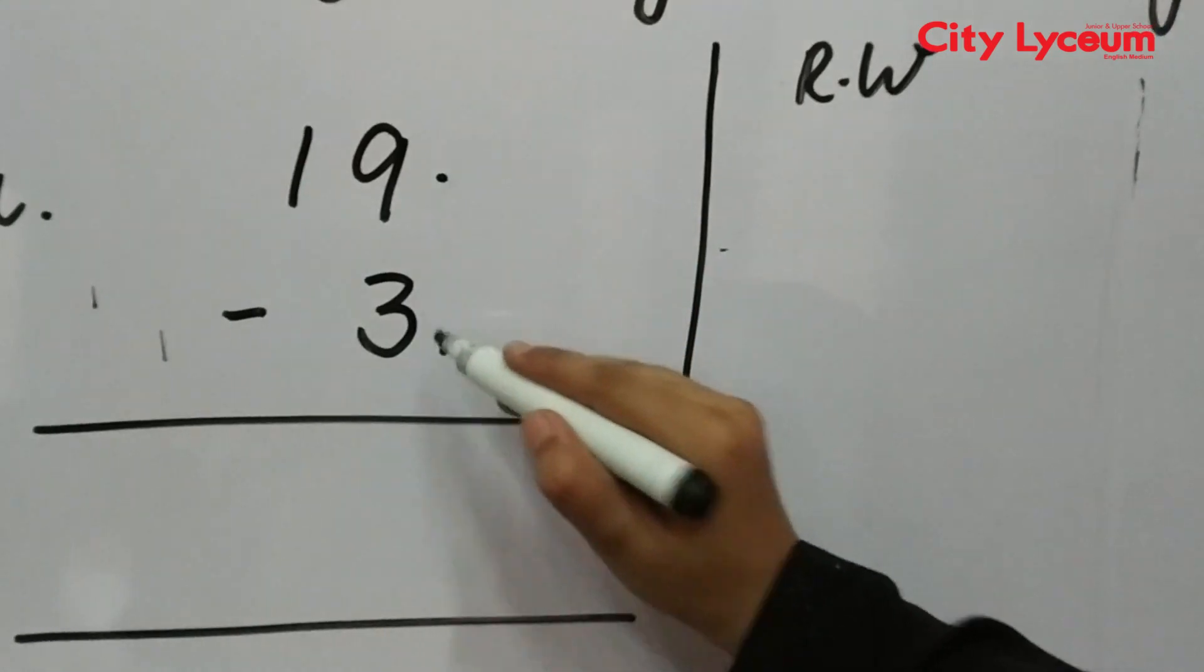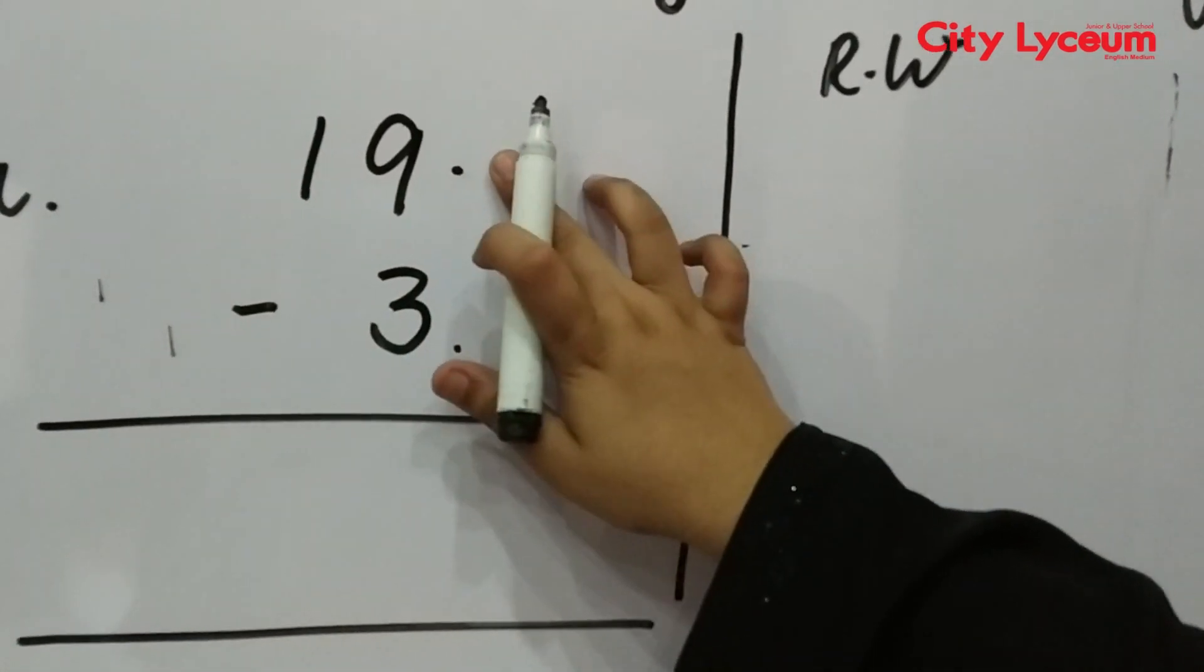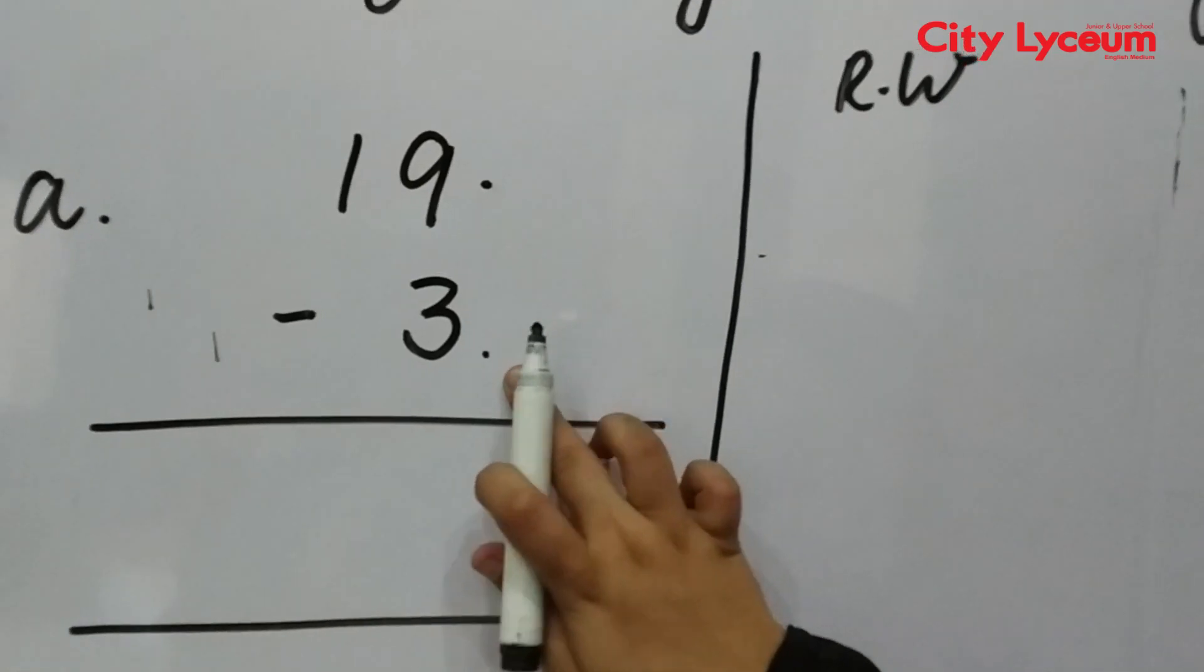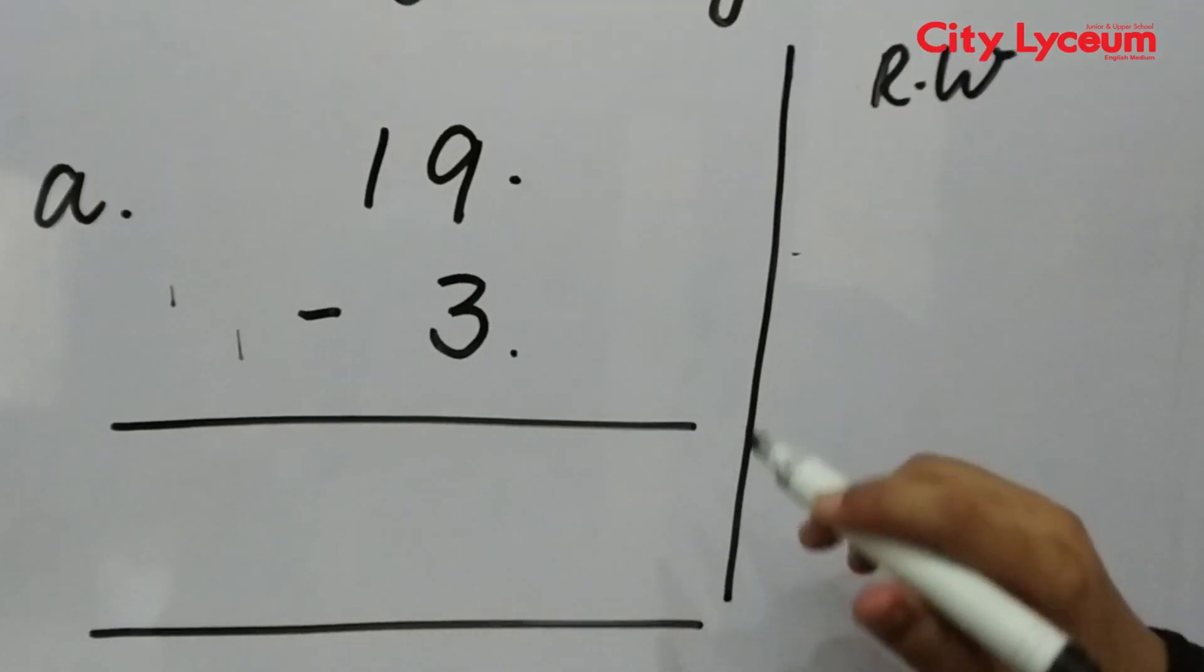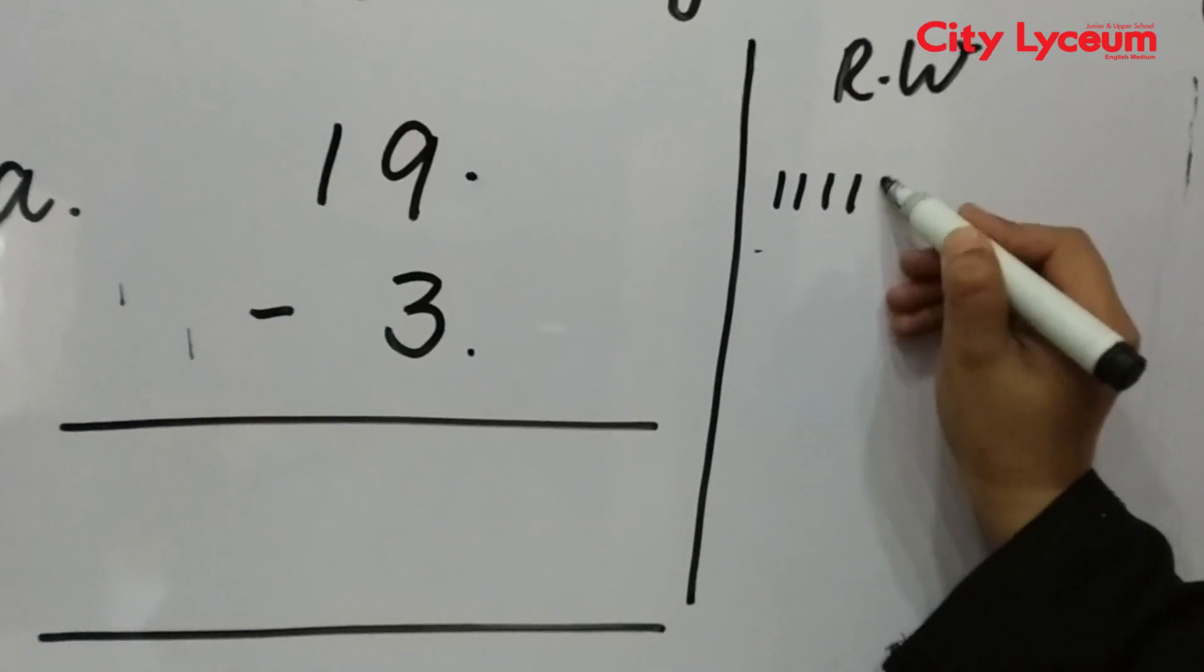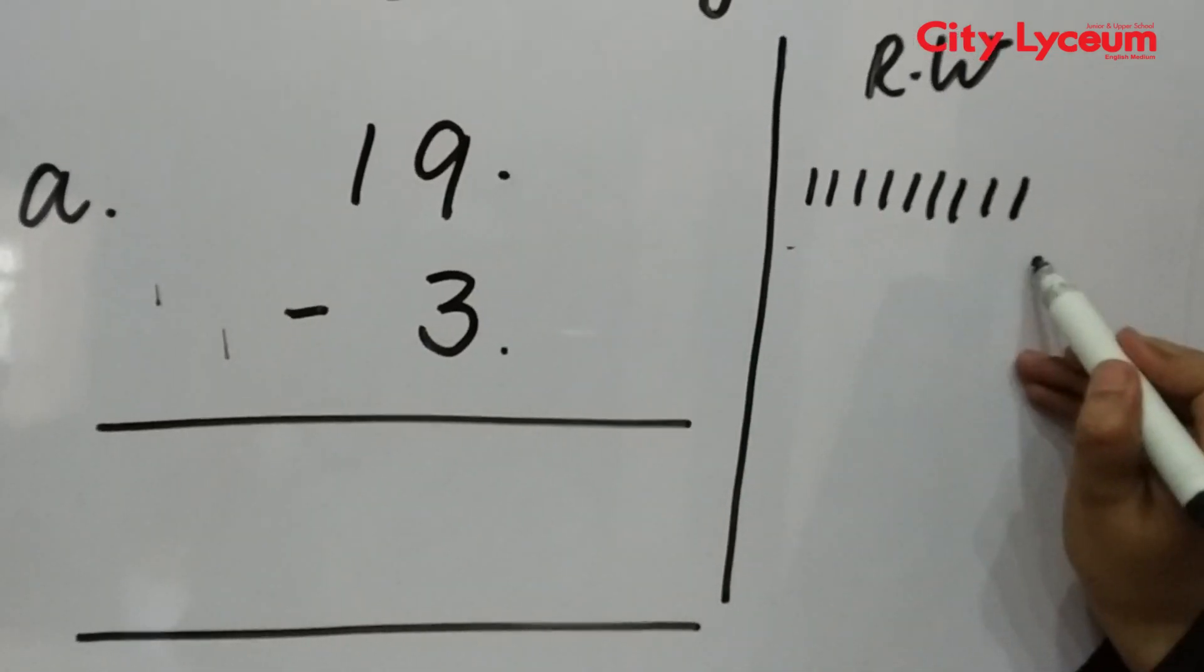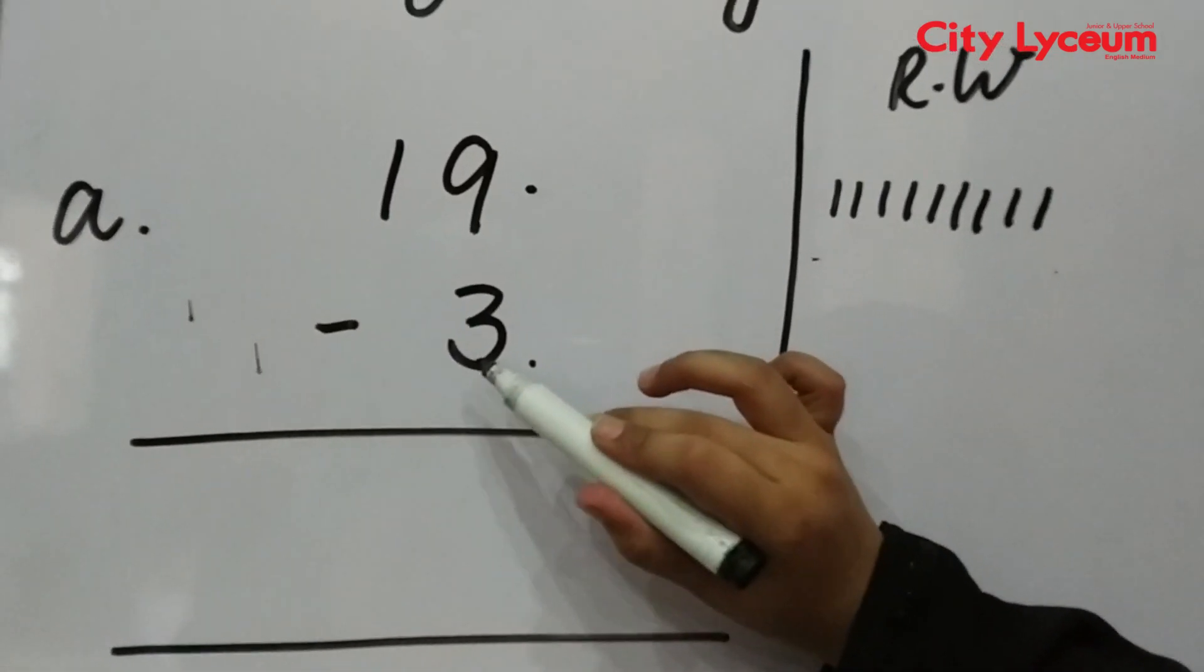Now we have to minus 3. 19 is a big amount and 3 is a small amount, so you will easily minus. First we will add 19 lines: 1, 2, 3, 4, 5, 6, 7, 8, 9. I have written 9 lines.